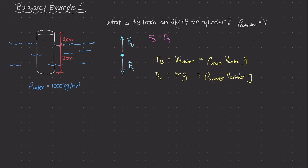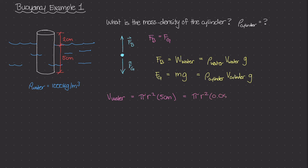Let's calculate the two volumes: V sub water and V sub cylinder. Starting with the volume of water displaced — this is a cylinder, so volume equals area times depth, where area is pi r squared. The depth is only 5 centimeters, because that's how much of the cylinder is beneath the water. Converting to standard units: V sub water equals pi r squared times 0.05 meters.